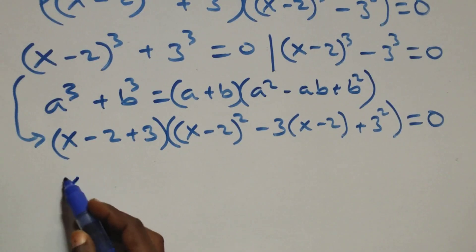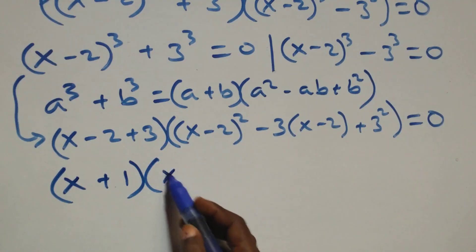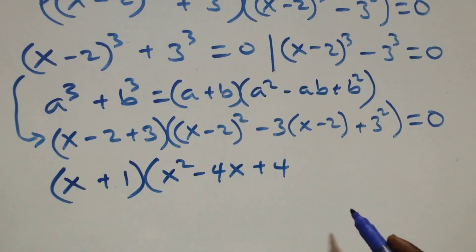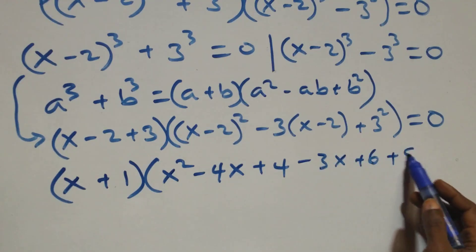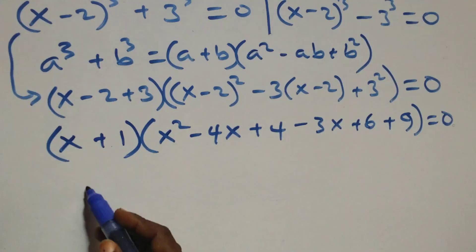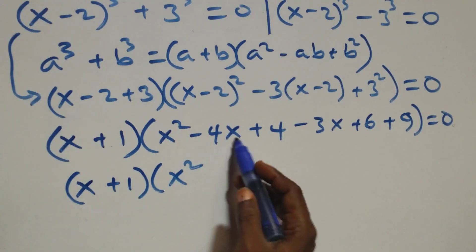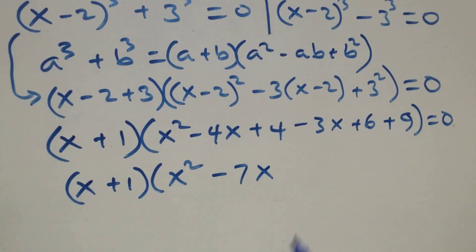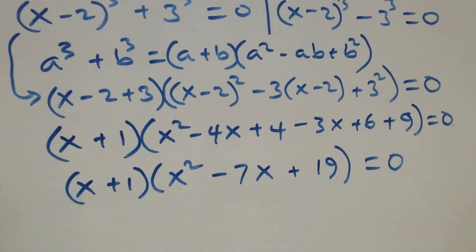This gives us (x + 1) times the bracket: x squared minus 4x minus 3x plus 6 plus 9, equals 0. Simplifying inside: x squared minus 7x, then 9 plus 6 is 15, plus 4 is 19 — so x squared minus 7x plus 19, equals 0.